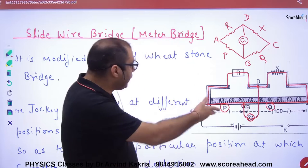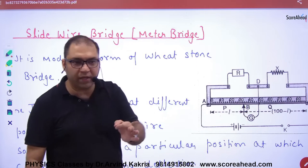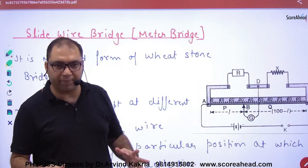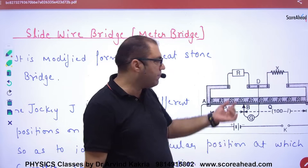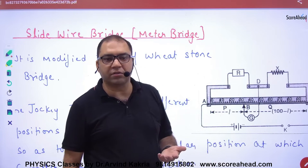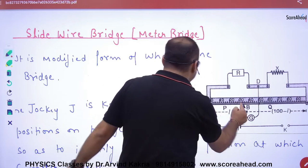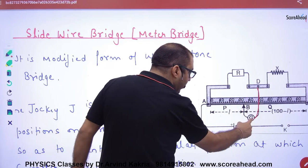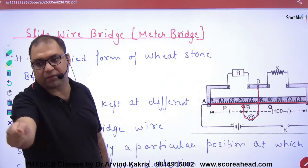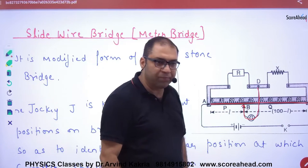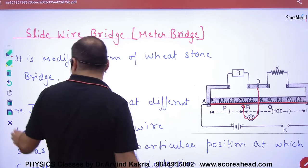In the meter bridge, we apply exactly this condition: R by X equals P by Q when the galvanometer reading is zero. For the unknown resistance X, we need 4 resistances — 1 unknown and 3 known. The meter bridge wire acts as the slide, and we use a slider or jockey on this wire.